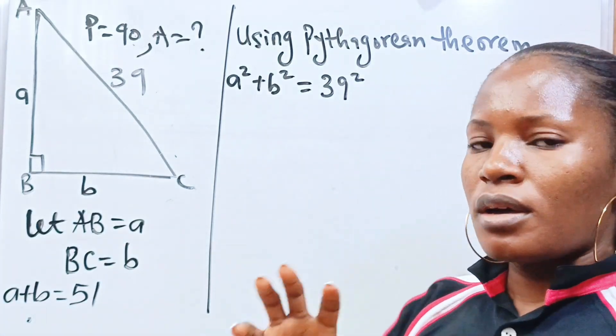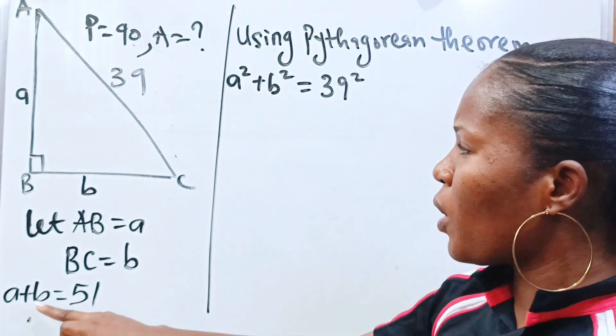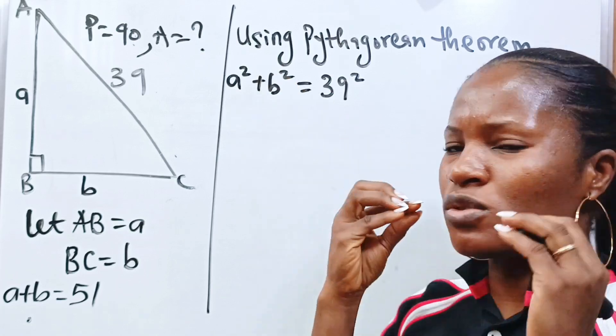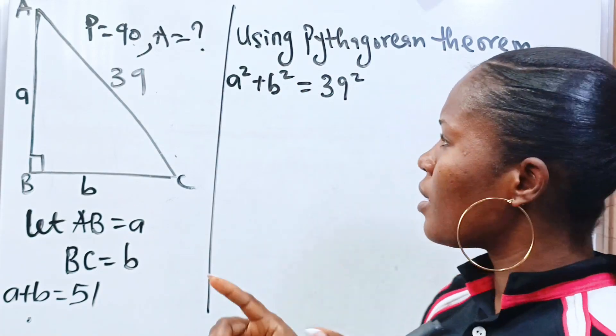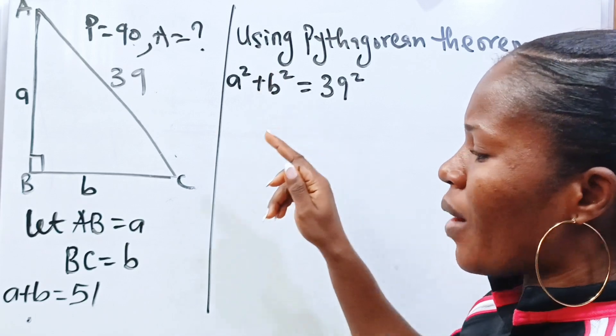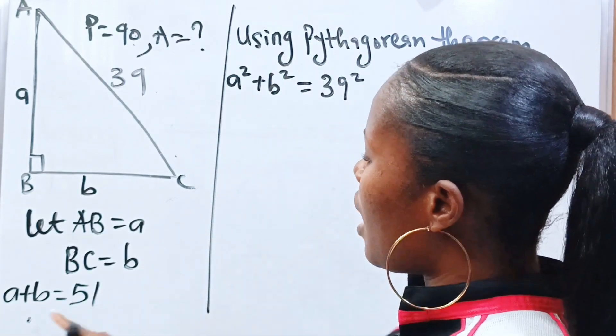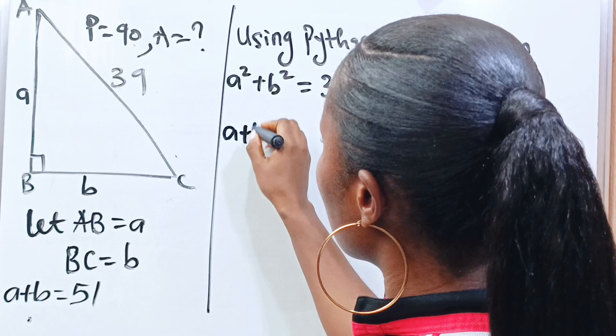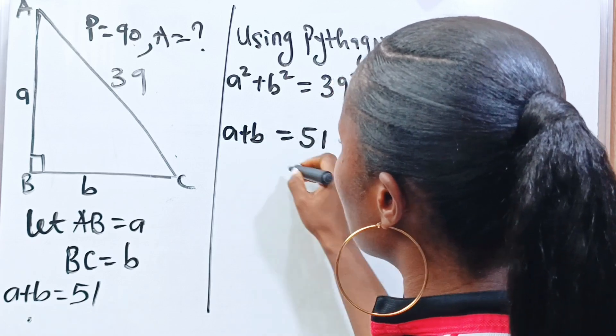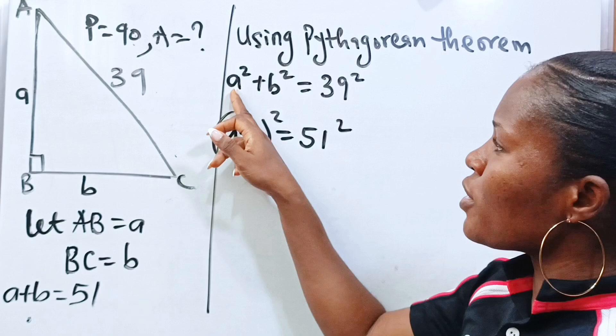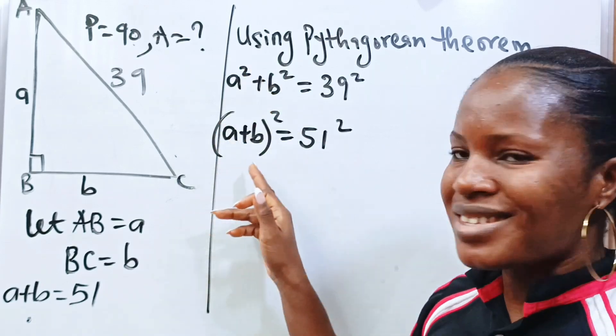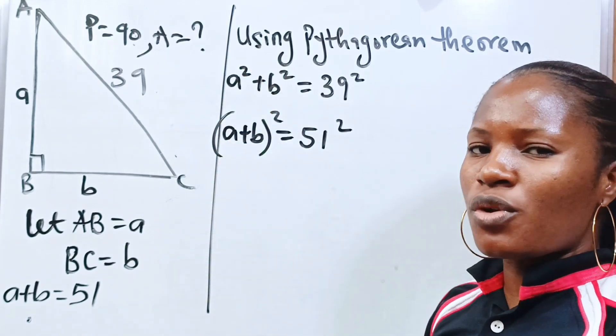But let us relate a plus b and a squared plus b squared somewhere. What am I trying to say? In algebra, a squared plus b squared will lead us to somewhere. Now, we have a plus b equals 51. If we square both sides of this equation, then we are going to get a squared plus b squared inside here. Let's try and see what is going to happen.